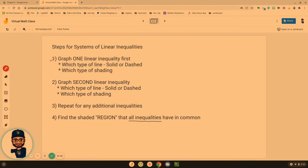Okay. So step one, check. Graph the first one. Step two, check. Graph the second one. Step three, repeat. We don't have any more. So that's a check. Step four, find the shaded region that all inequalities have in common.